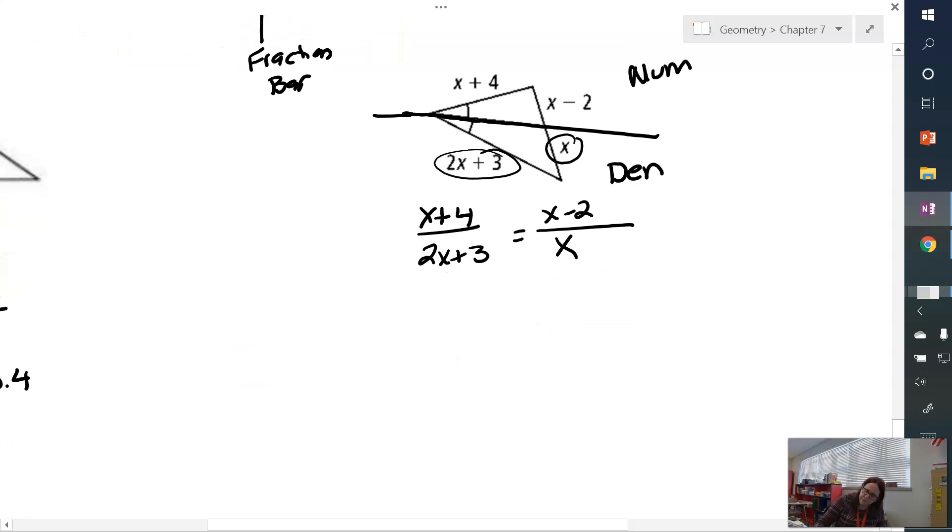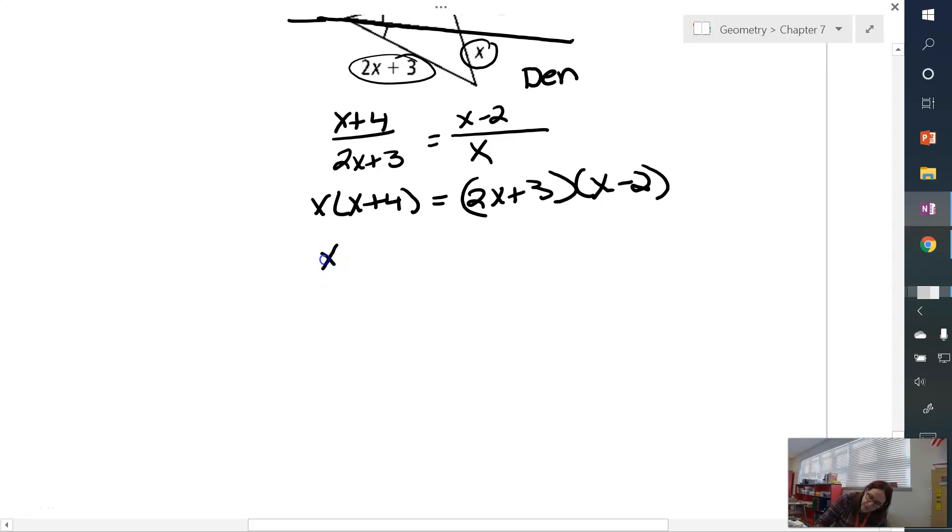Now let's solve. x times x plus 4 equals 2x plus 3 times x minus 2. So, I've done the cross multiply. We are going to get into quadratics on this one, but that's okay. We can handle it. x squared plus 4x. So, just distribute. Now, on the other side, I have to distribute each term one by one. The first one I will distribute is the 2x. So, I get a 2x squared. Now, I'm going to distribute it to the second term. That's a minus 4x. So, I'm all done distributing 2x. Now, I'm going to distribute my 3. 3 times x. And then, 3 times negative 2.